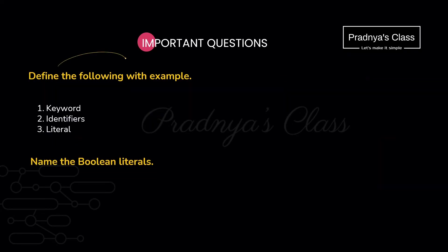Let's proceed to the next question — we need to define the following terms. Keywords are special words which have special meaning to the programming language. Identifiers are the names given to different parts of the program. Literals are nothing but constants. The next question asks to name the boolean literals — there are two: True and False.